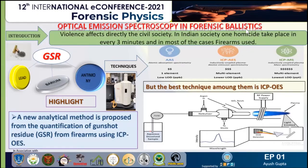During firing, a considerable amount of material in the gaseous or solid aerosol phase is produced and expelled. The gaseous phase is converted into the solidified phase, which is called GSR — gunshot residue. The gunshot residue basically consists of three elements like lead, barium, and antimony.